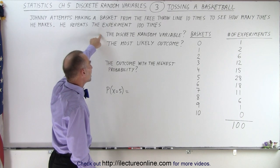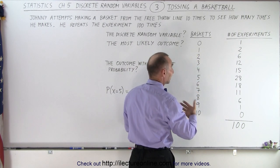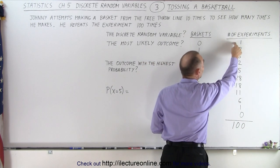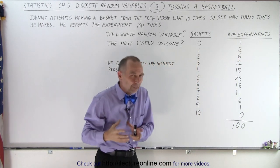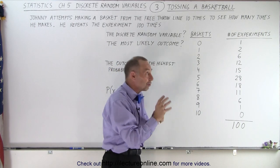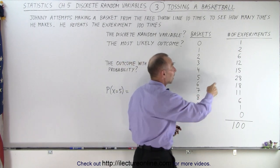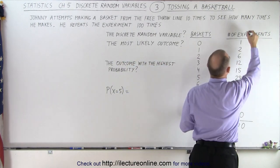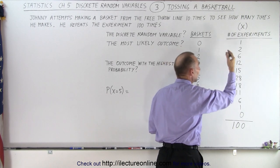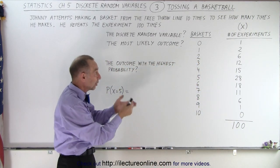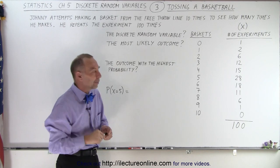So what is the discrete random variable? Notice that here's the number of baskets he made trying 10 times, and here the number of times that happened in each of the 100 experiments. The random variable becomes the number of experiments in which he makes zero baskets, one basket, two baskets, three baskets, and so on. It's a discrete random variable because it's a numerical integer count — he makes it once, two times, six times, twelve times.